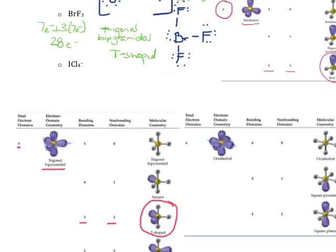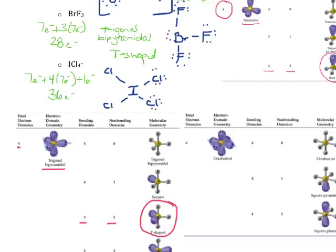The last molecule is ICl₄⁻. Iodine gives us 7 valence electrons. We've got 4 chlorines each also bringing 7. The negative charge means we've got 1 extra electron, giving us a grand total of 36 electrons. Iodine goes in the center with single bonds to 4 chlorines, using 8 electrons. After filling all 4 chlorines' octets, we still have 4 electrons remaining, and those go on the central iodine atom, using all 36 electrons.